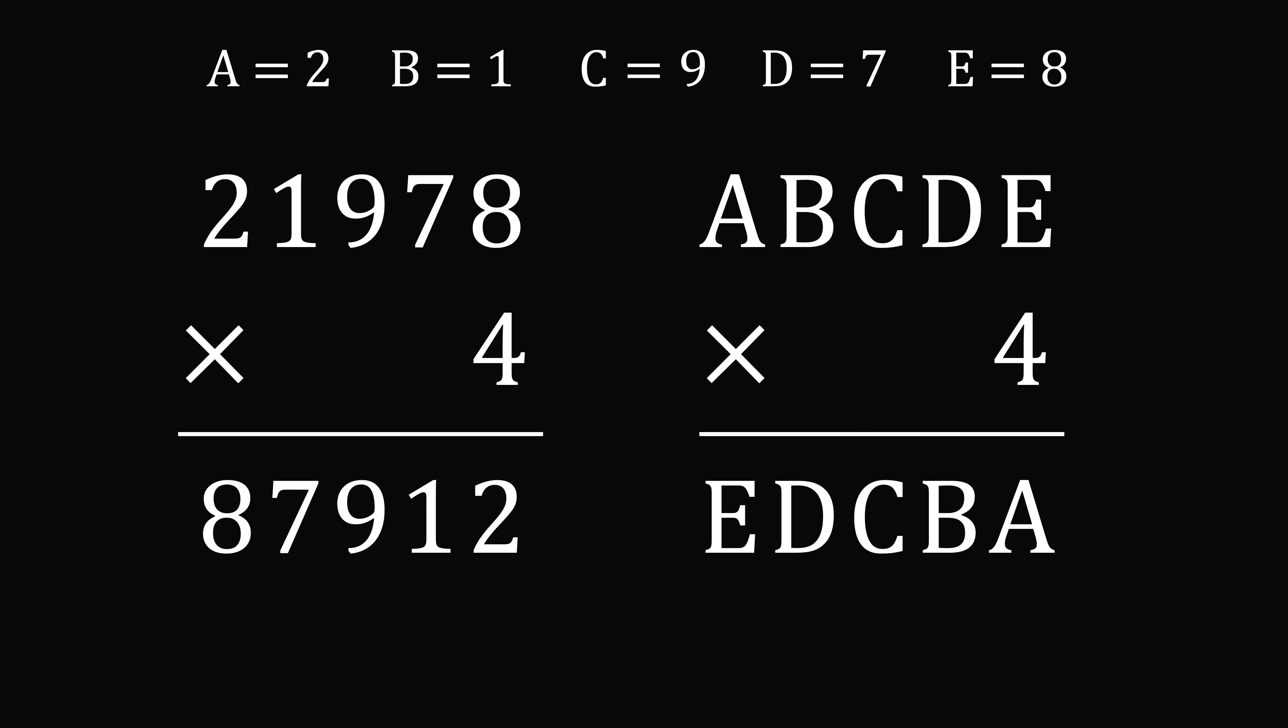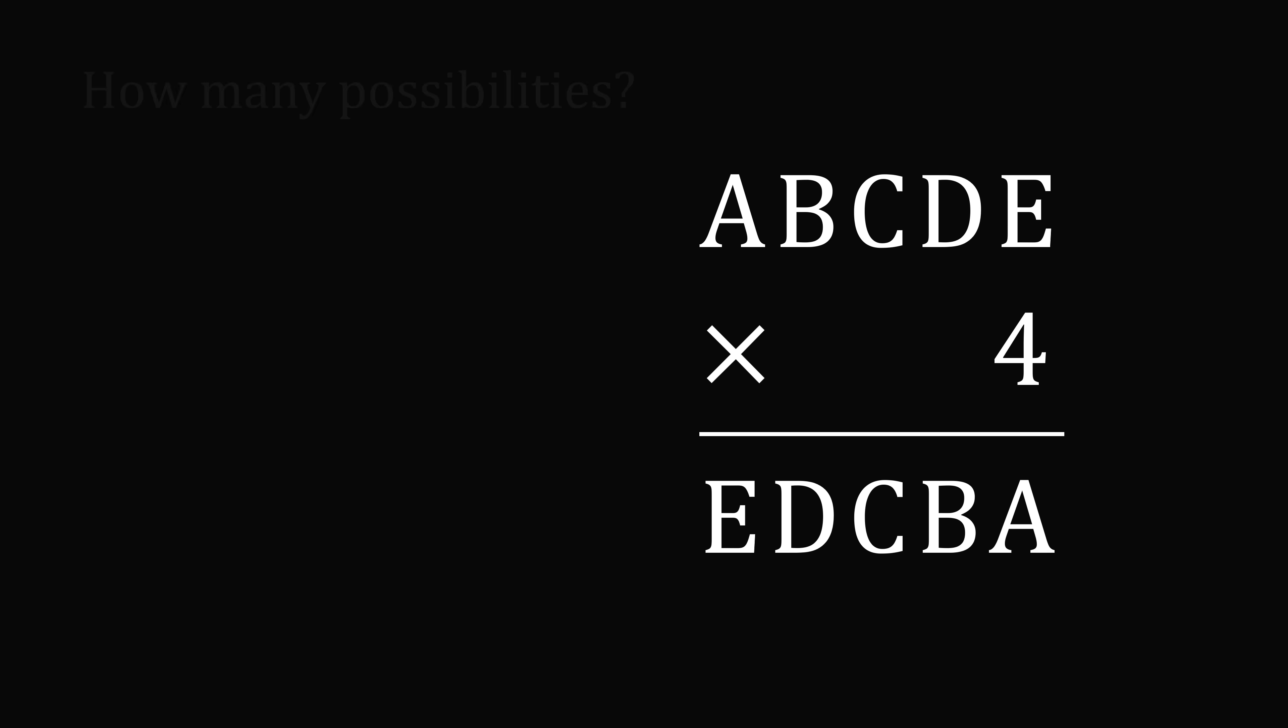Of course our logical deductions were perfectly made. But what if we had made a mistake? Wouldn't it be safer to check through all of the possibilities? So how many possible numbers can there be for ABCDE? Well, A can have a total of 10 different options because there are 10 digits from 0 to 9. Once we set a value for A, the digit B can be any of the 9 remaining digits. Then C can be any of the 8 remaining digits, D can be any of the 7, and E can be any of the 6 remaining digits. Multiplying all these options gives 30,240 possibilities.